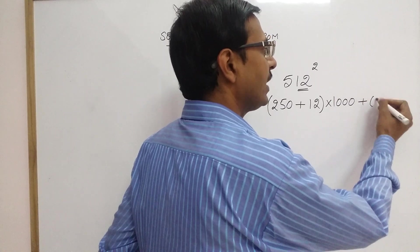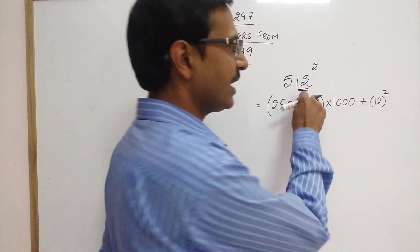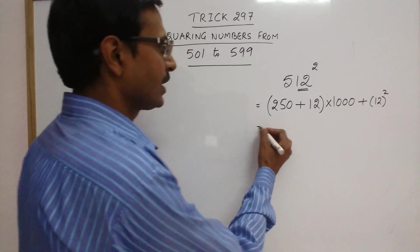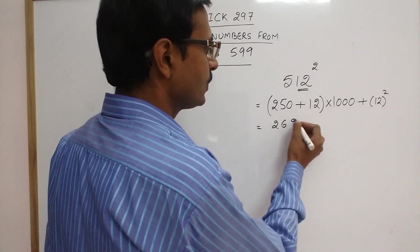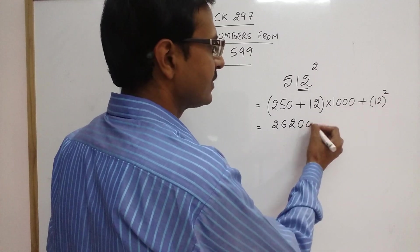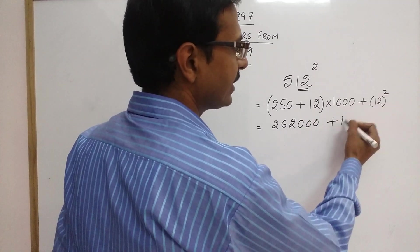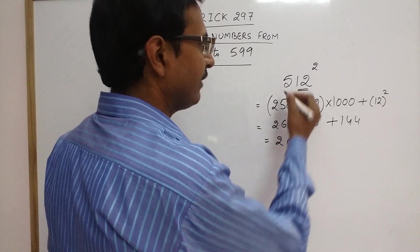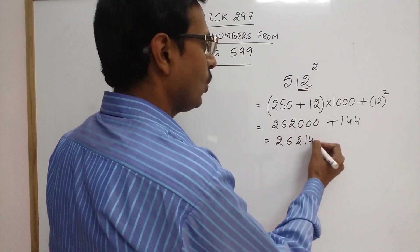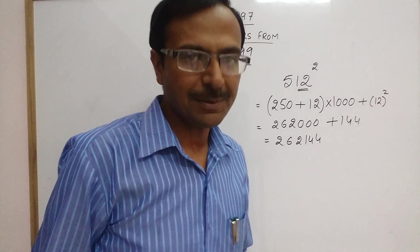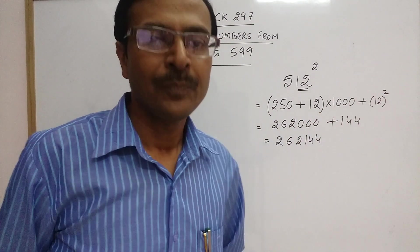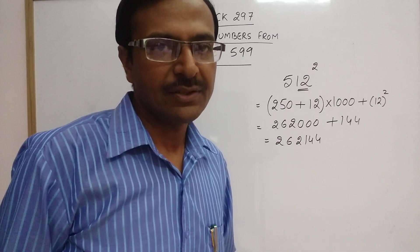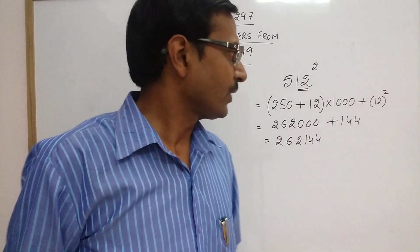Add the square of this number which I have underlined here to the product. So this is 250 plus 12, 262. And now we have 3 zeros. And now we have to add 12 square, that is 144. So your answer for the square of 512 is 262,144. Isn't that amazing? Just one step to remember, and we can find out the square of all such numbers orally within 4 seconds.